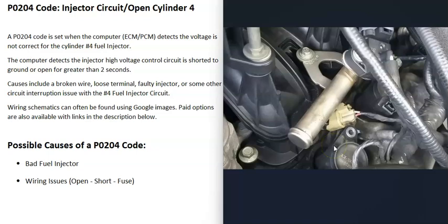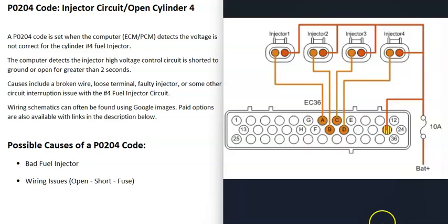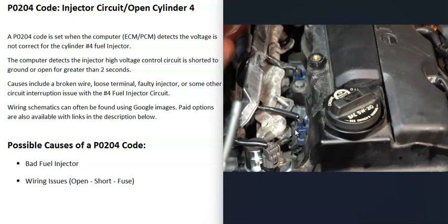If the fuel injector tests good, the next thing that could cause this is a wiring issue — an open, a short, or a bad connection. It's always a good idea to get a wiring diagram for your specific vehicle since there can be differences. Usually these fuel injectors have two wires: 12 volts going to it, and the computer controls the ground side to complete the circuit. Put the key in the on position, check the wires, and make sure you have voltage going to it. If you don't, you have an open in that wire — check the fuses as well.